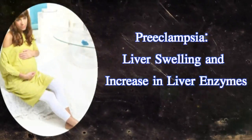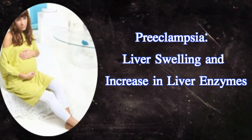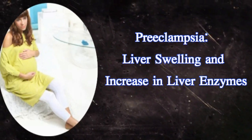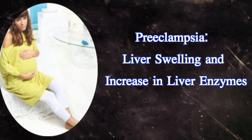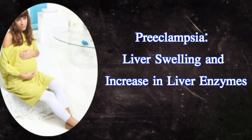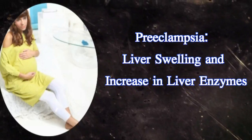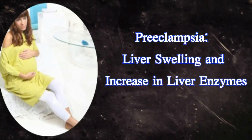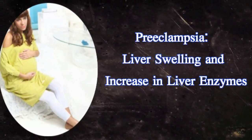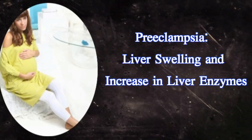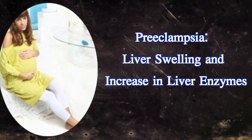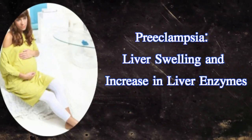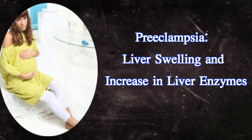Preeclampsia — liver swelling and increase in liver enzymes. This is the most commonly observed problem in pregnant women. Preeclampsia is characterized by a rise in the level of liver enzymes that leads to severe swelling of the liver. An early symptom is high blood pressure experienced by the mother. Liver damage is caused due to the leakage of proteins through urine. It mainly occurs during the third trimester, and if not treated early, it causes strokes, seizures, and even death of the mother, baby, or both.